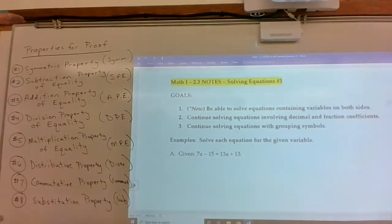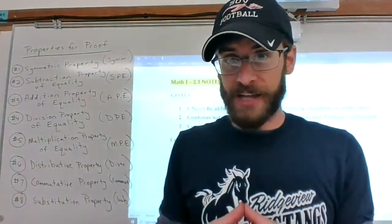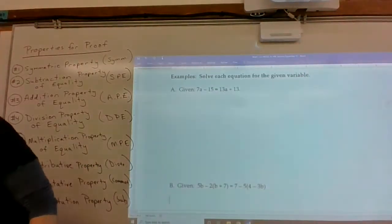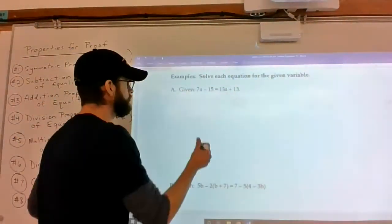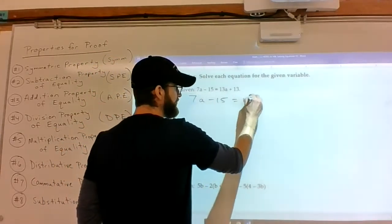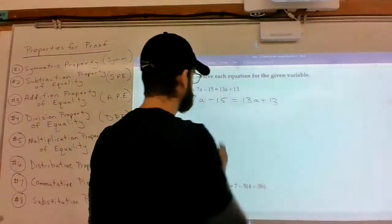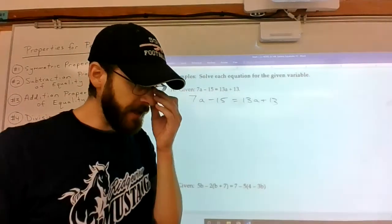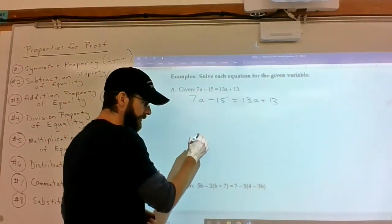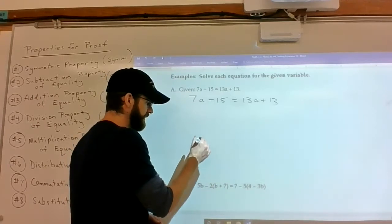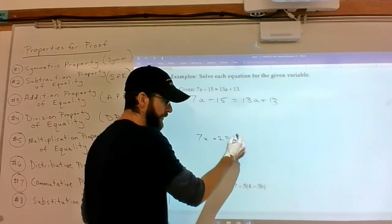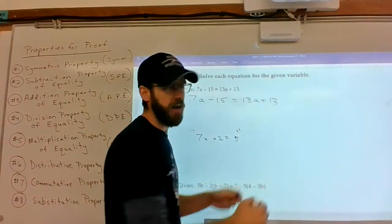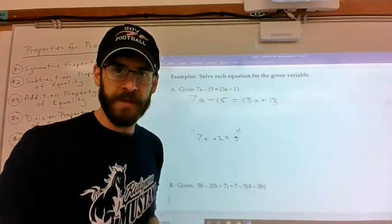So let's get started. We still have our properties of proof that we're going to use over here. And this is going to be the last section where I ask you to document the properties. So first example. You're given 7a minus 15 is equal to 13a plus 13. Well, it would be very helpful if we could do exactly what we did from the previous section. Let's make it look like 7x plus 2 is equal to 5. We want it to look like variable plus or minus a constant equals a constant. If we can make it look like that, then it should be pretty straightforward because we did that in section 2.1.